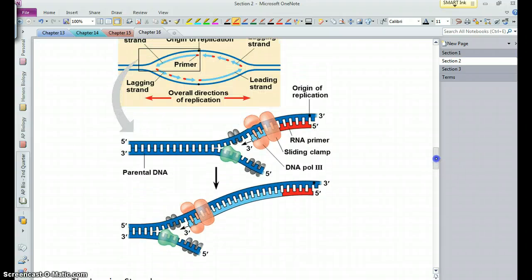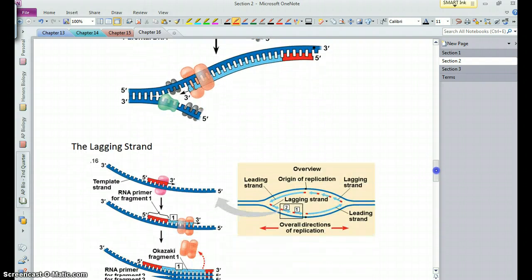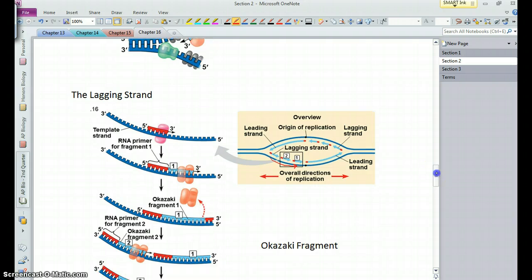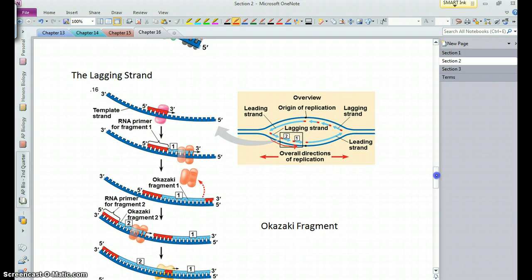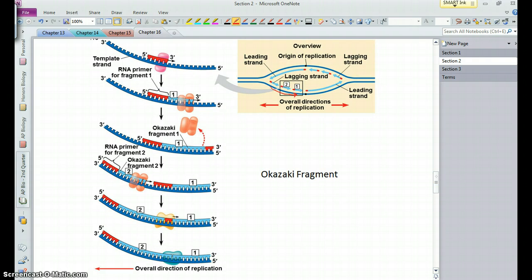So we get what we call the leading strand, which is the side where it's building towards the replication fork. And you get a lagging strand where it's building away from the replication fork. And so it has to work in the opposite direction. You have the same players involved, it's just going away from the replication fork.